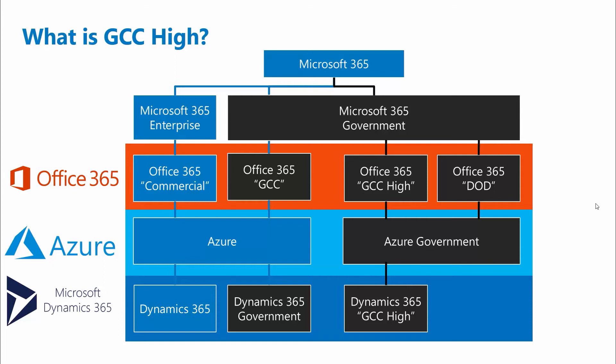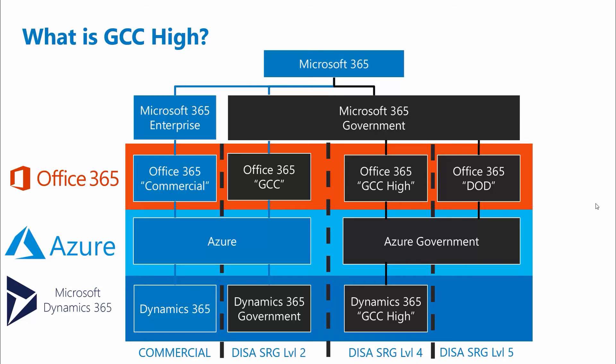Finally, I want to talk about impact levels briefly. DISA SRG stands for Defense Information Systems Agency, and SRG refers to the DOD Cloud Computing Security Requirements Guide, which lays out baseline requirements for cloud service providers that host DOD information systems. Level 4 covers CUI and CDI. Level 5 is for agency-owned information that might need a higher level of protection as well as unclassified national security systems. Level 2 is for local governments handling non-controlled unclassified information.